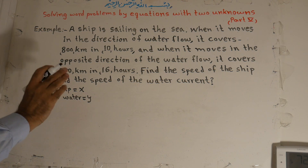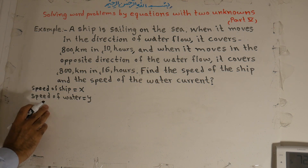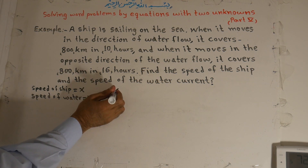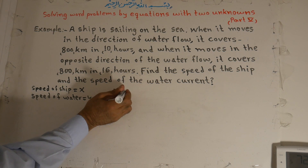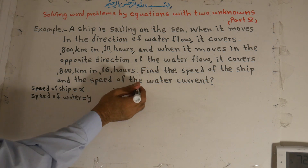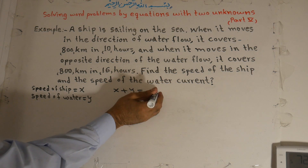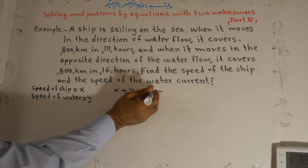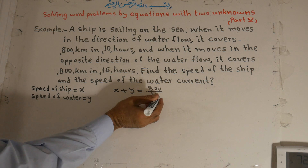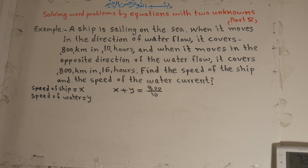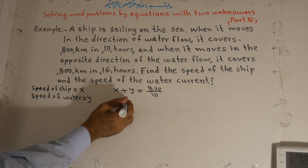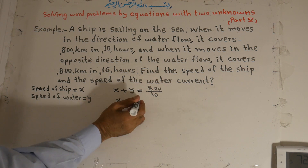Now, when moving in the same direction, the water current helps the speed of the ship. That means x plus y — the speed of the ship plus the speed of the water — covers 800 kilometers in 10 hours. But when it moves against, or opposite to, the direction of the current, that means x minus y covers 800 kilometers in 16 hours.